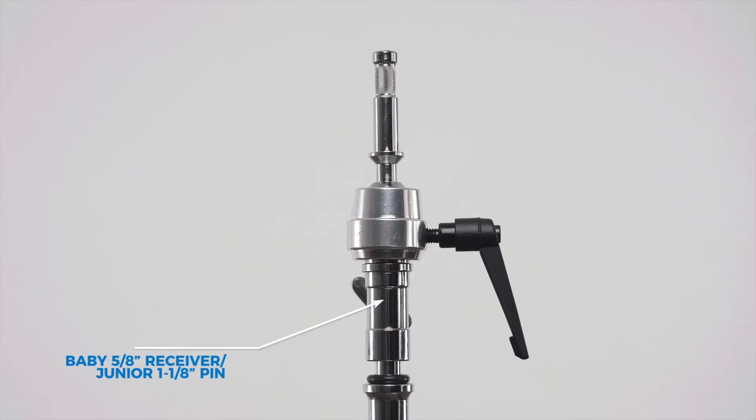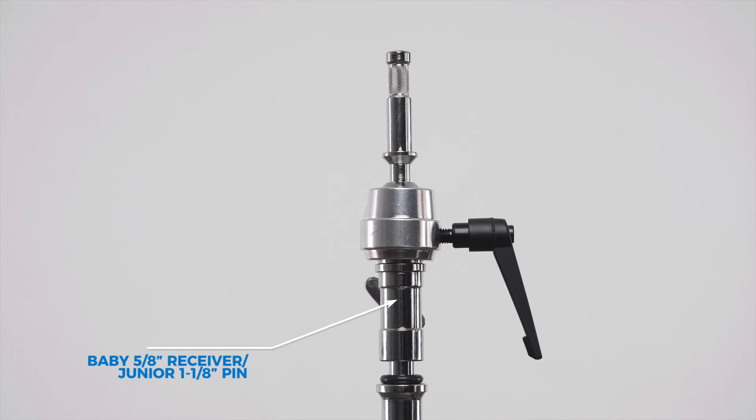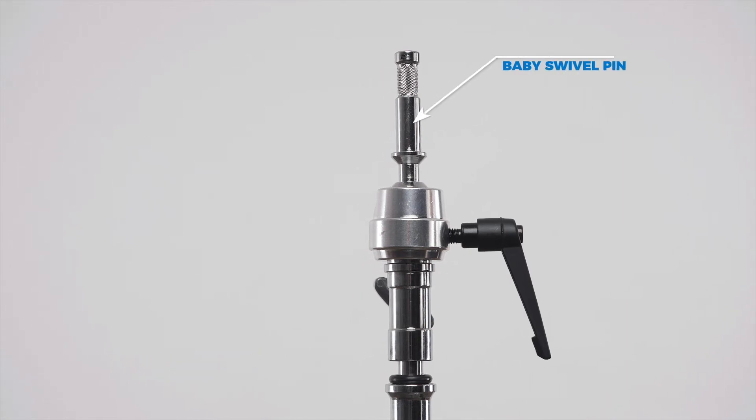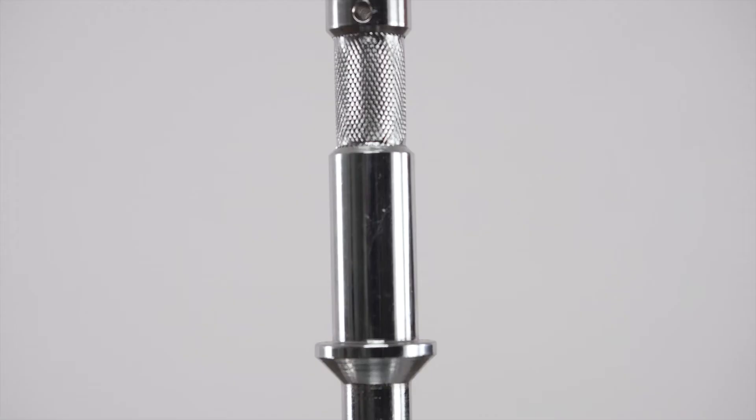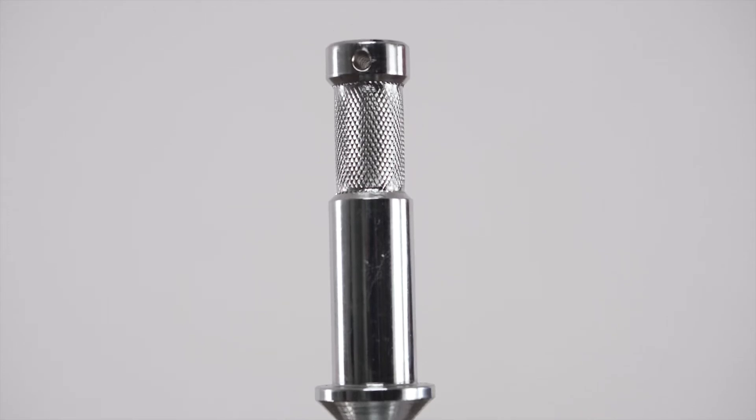The Supergrip finger consists of a baby 5/8-inch receiver, junior 1 1/8-inch pin combo on the bottom, and a baby swivel pin on top with a recessed neck that is knurled for maximum hold.